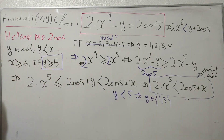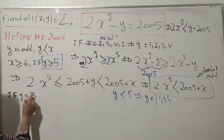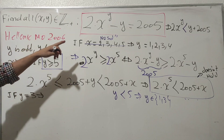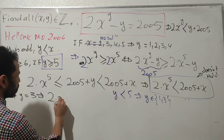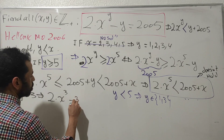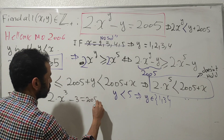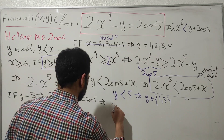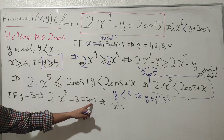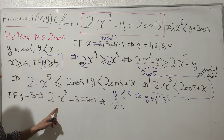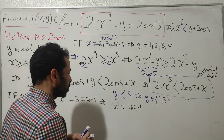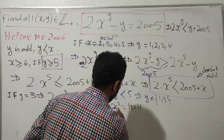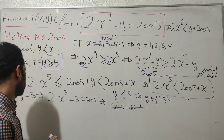Starting with y = 3: replacing y = 3 into the original equation gives 2·x^3 − 3 = 2005, so 2·x^3 = 2008, meaning x^3 = 1004. But 1004 is not a perfect cube, so y = 3 does not work.